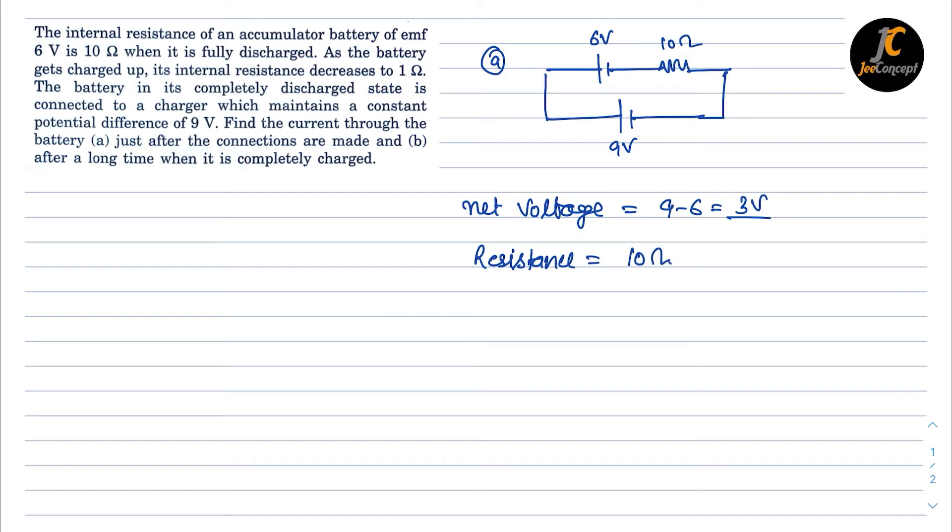So the current flow in this situation is going to be 3 upon 10, that means 0.3 ampere.